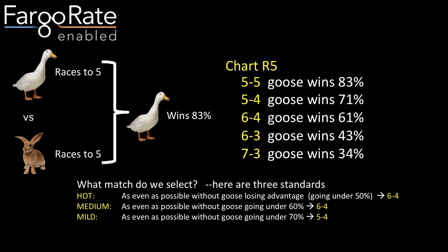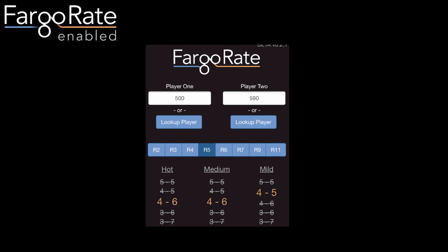Hot means selecting the match as close to 50-50 as possible without the higher-rated player — the Goose — losing the advantage, i.e., without the Goose going under a 50% chance to win. That leads to a six-to-four match-up in this case. Here's what it looks like in the fair match calculator: select match charts, enter the Goose's rating of 590 and the Rabbit's rating of 500, then select chart R5. You see those same match-ups — 5-5, 4-5, 4-6, 3-6, and 3-7 — and which one is selected according to hot, medium, and mild handicaps.